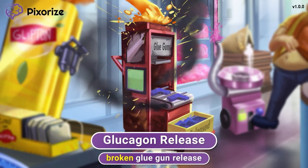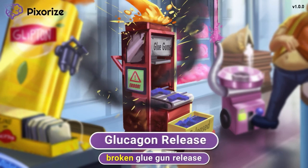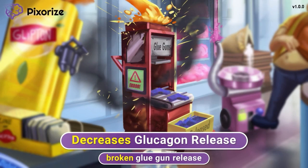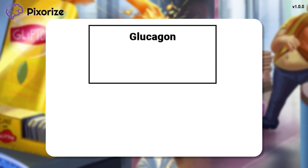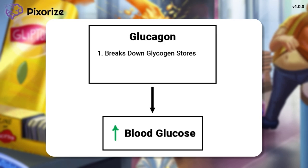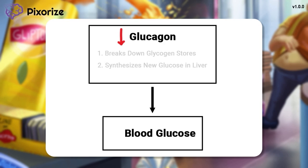That machine is no longer releasing glucagon. This should help you remember a decrease in glucagon release — another mechanism of the DPP-4 inhibitors. To review, glucagon is a hormone that normally works to increase blood glucose levels, most notably by breaking down glycogen stores or synthesizing new glucose in the liver. So a decrease in glucagon levels caused by DPP-4 inhibitors works to decrease blood sugar levels.